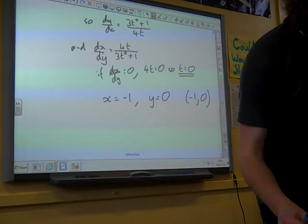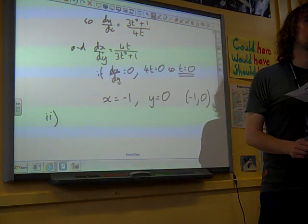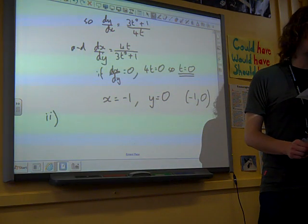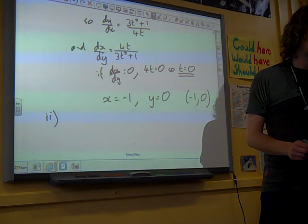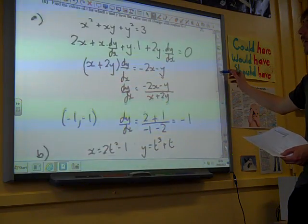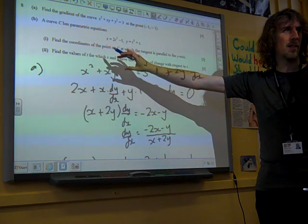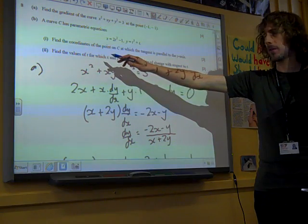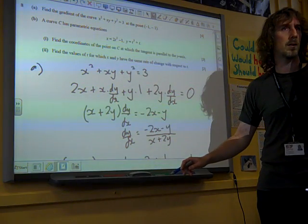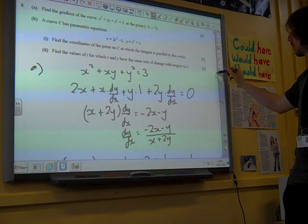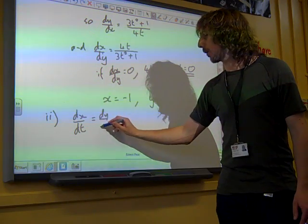Part 2. Find the values of t for which x and y have the same rate of change with respect to t. Well, it looks like a strange bit of a question, but actually, rather than panic about this, this is actually a very simple thing. This is really just saying, find the values of t when dx/dt and dy/dt are equal to each other. So we want to know when dx/dt equals dy/dt.